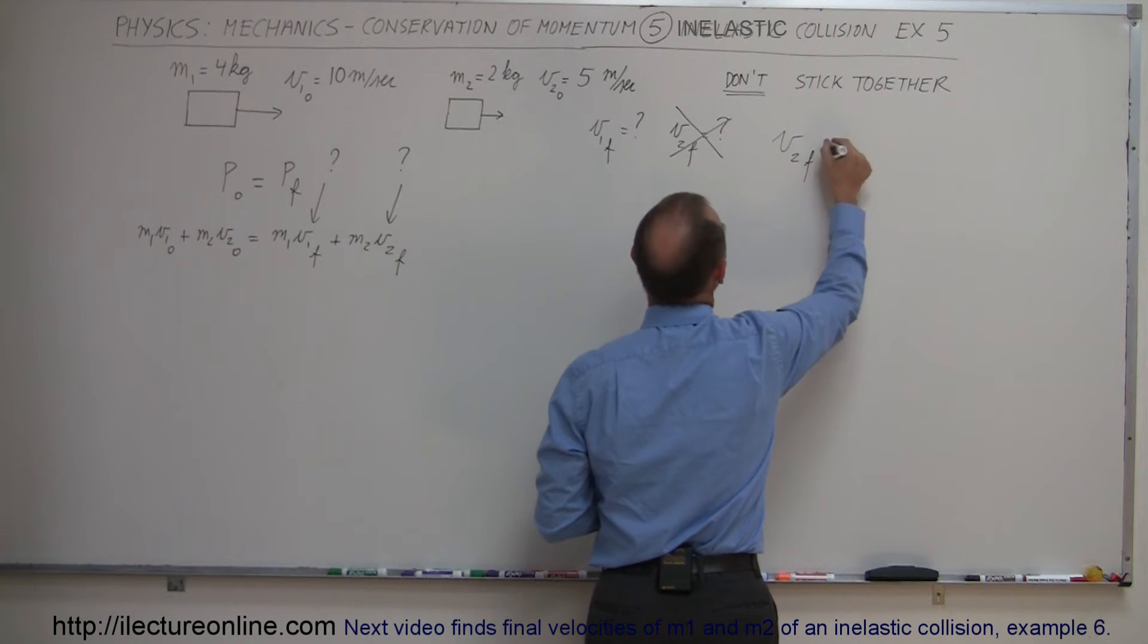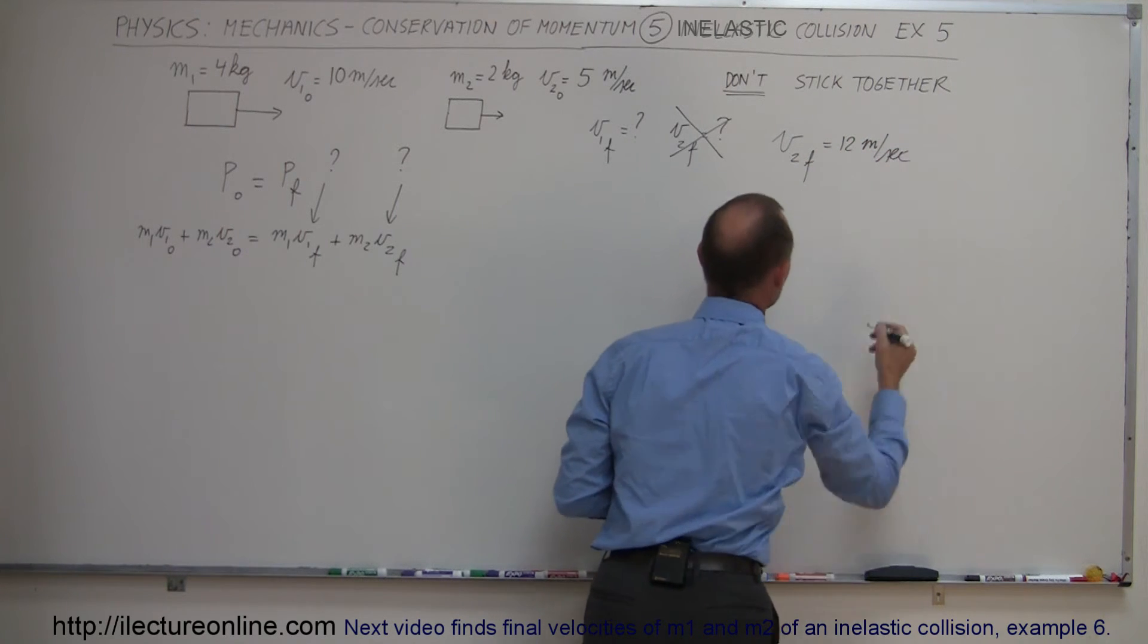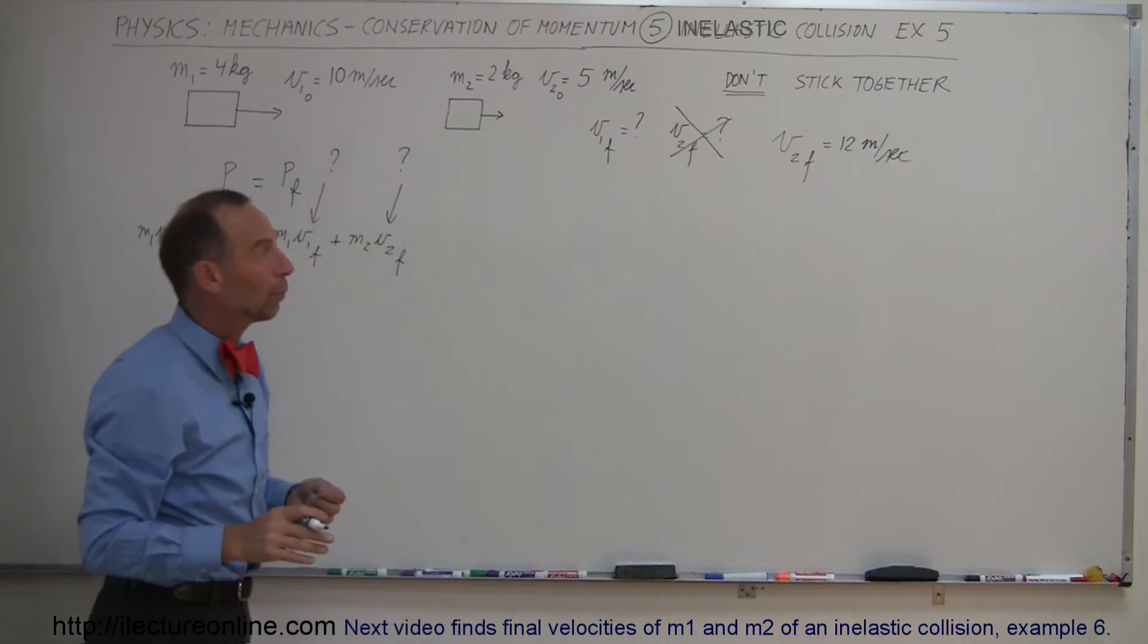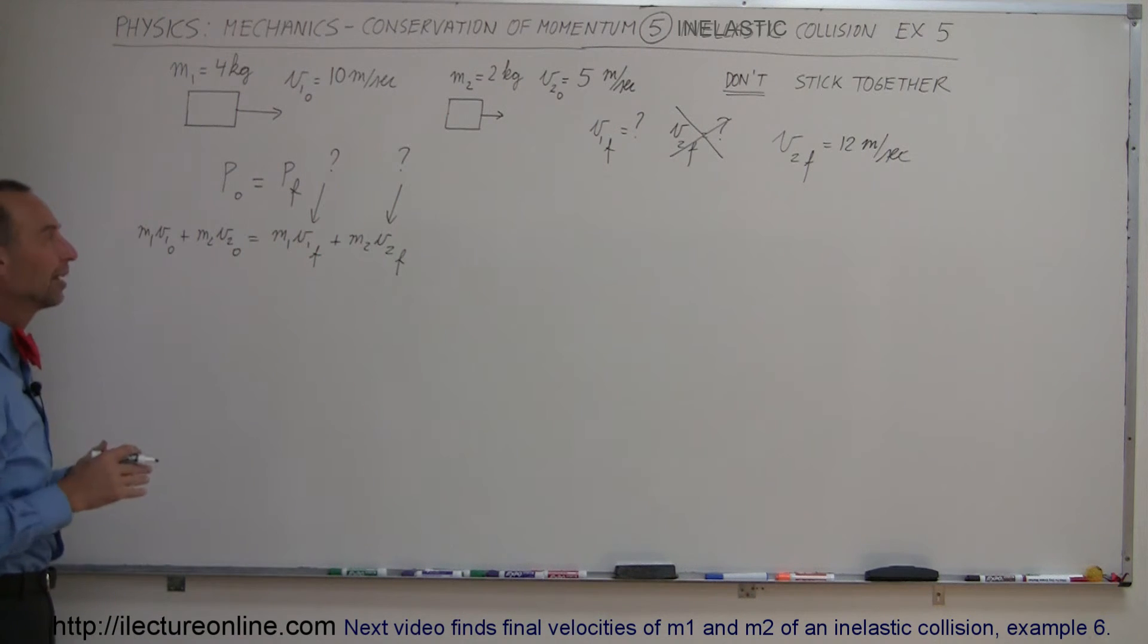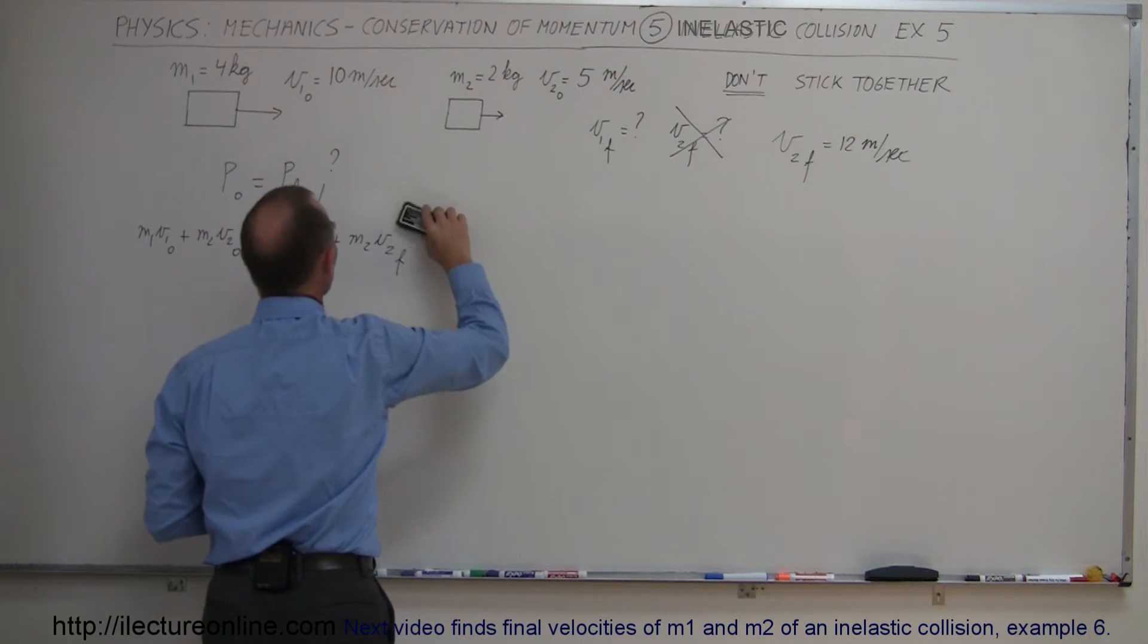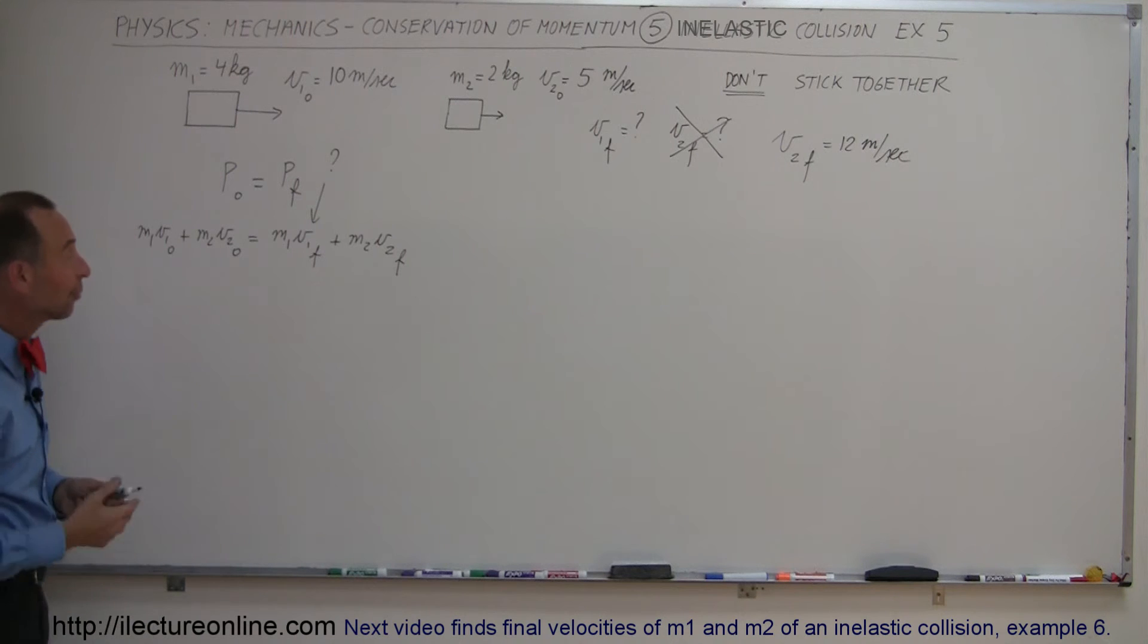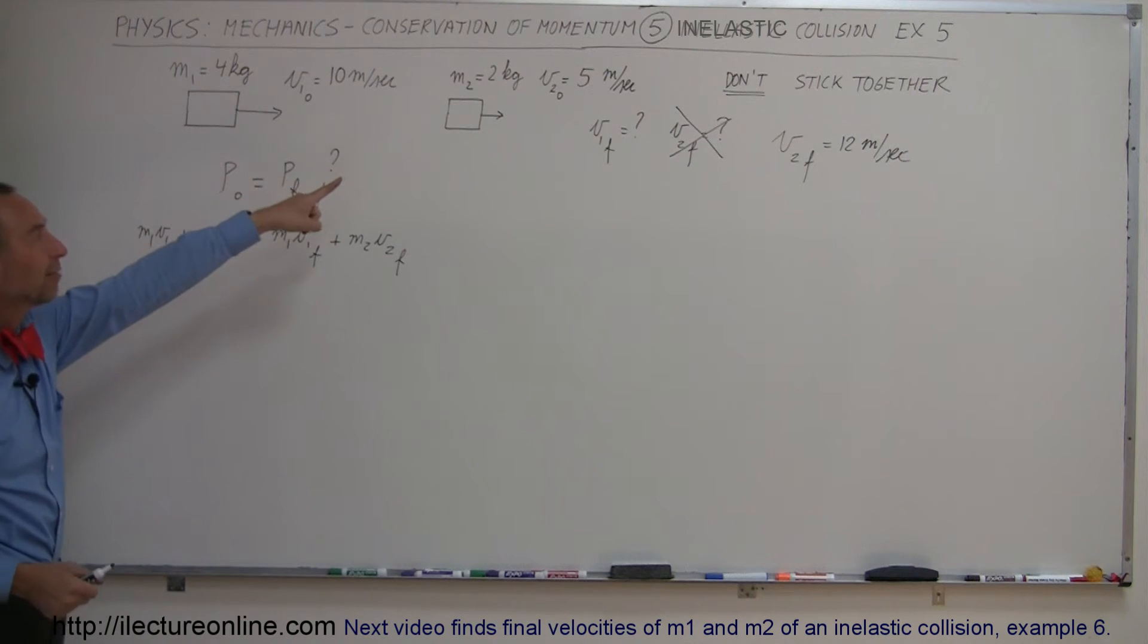We're going to give you V2 final as an extra piece of information. So V2 final, let's say it's equal to 12 meters per second after the collision. So what will then happen to the first object? In this case V2 final is no longer an unknown. We only have to solve for one of the unknowns. There's only one left which is V1 final. What is the final velocity of this mass if that mass will have a final velocity of 12 meters per second?